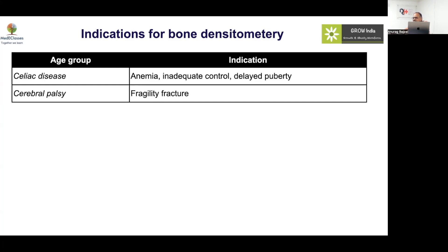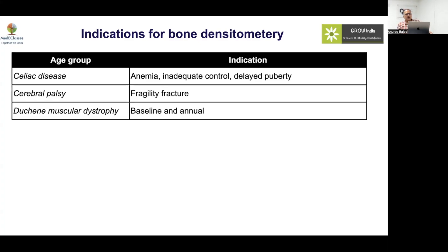In cerebral palsy, getting a bone density done is not easy because of body structure and the contorted shape, making assessment difficult. But if there is a fragility fracture, you have to worry about bone density. In DMD, you should do a baseline scan and annually thereafter — treat early, because it is one of the major causes of morbidity and mortality in DMD.